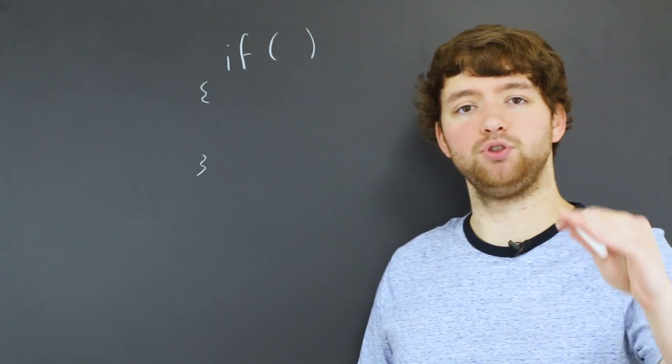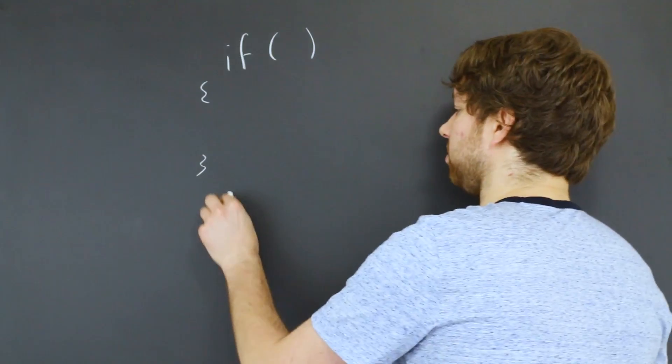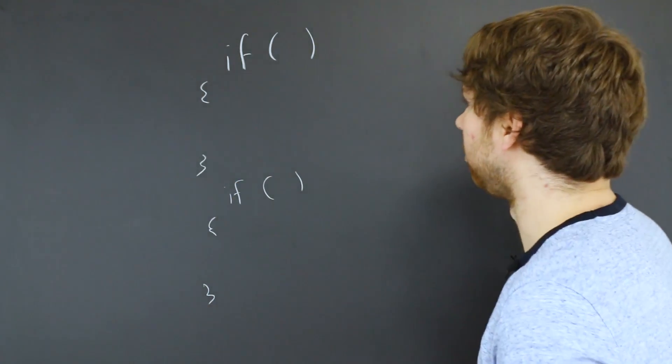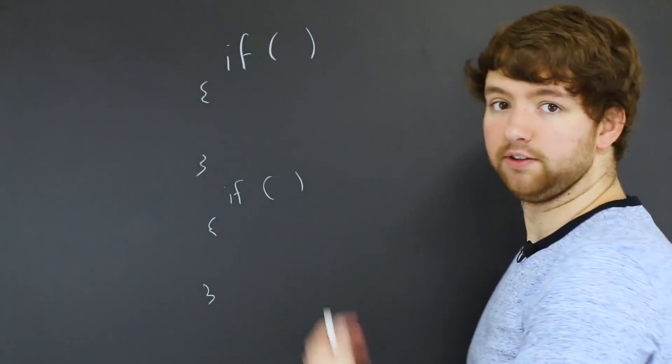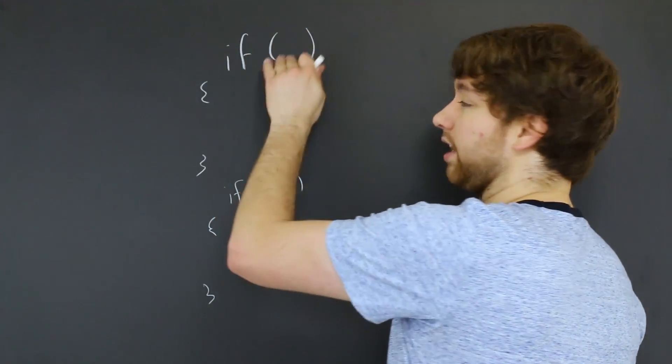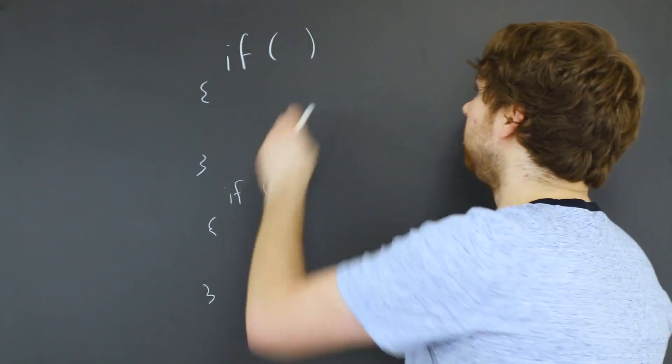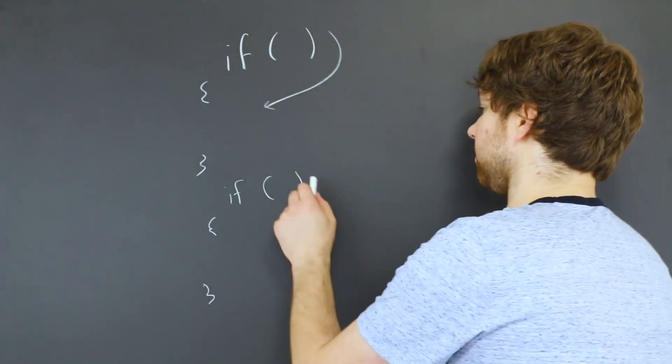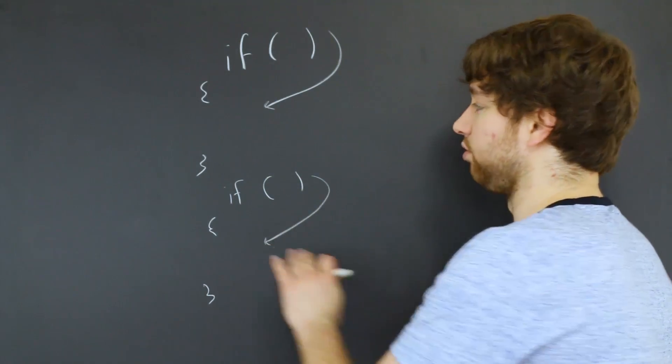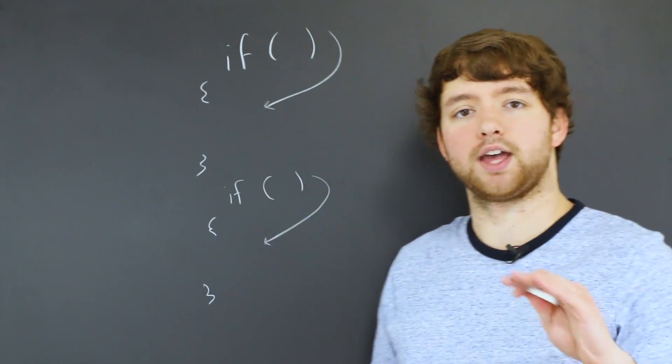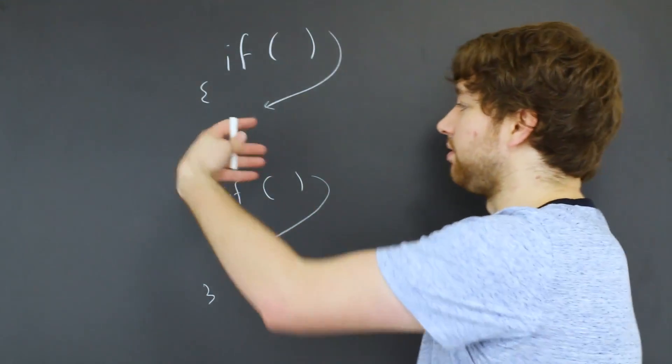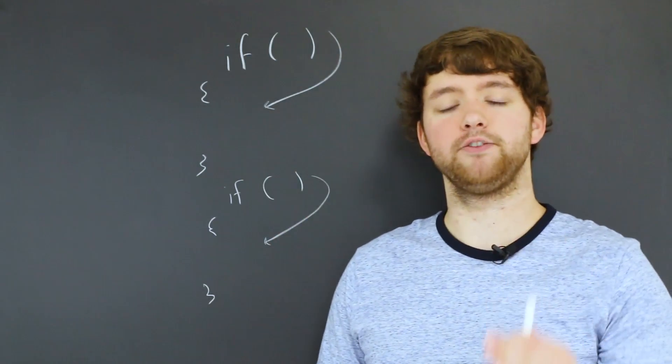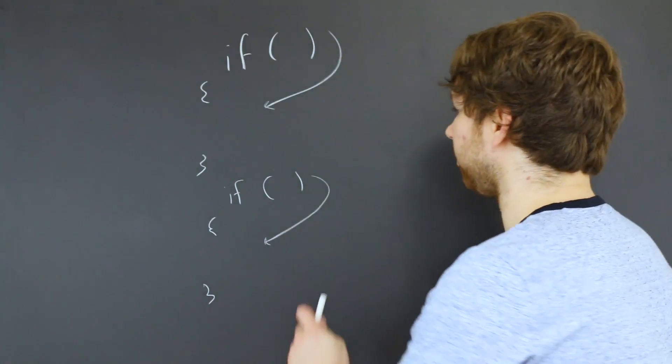When you have two if statements in a row, those are both going to be evaluated. If we're going line by line, the first if statement's going to be hit and evaluated as either true or false. If it's true we're going to go into the code block, then we go on to the next if statement and that one is evaluated. What that means is that when you have multiple if statements in a row, you have the potential that both of them are going to execute.